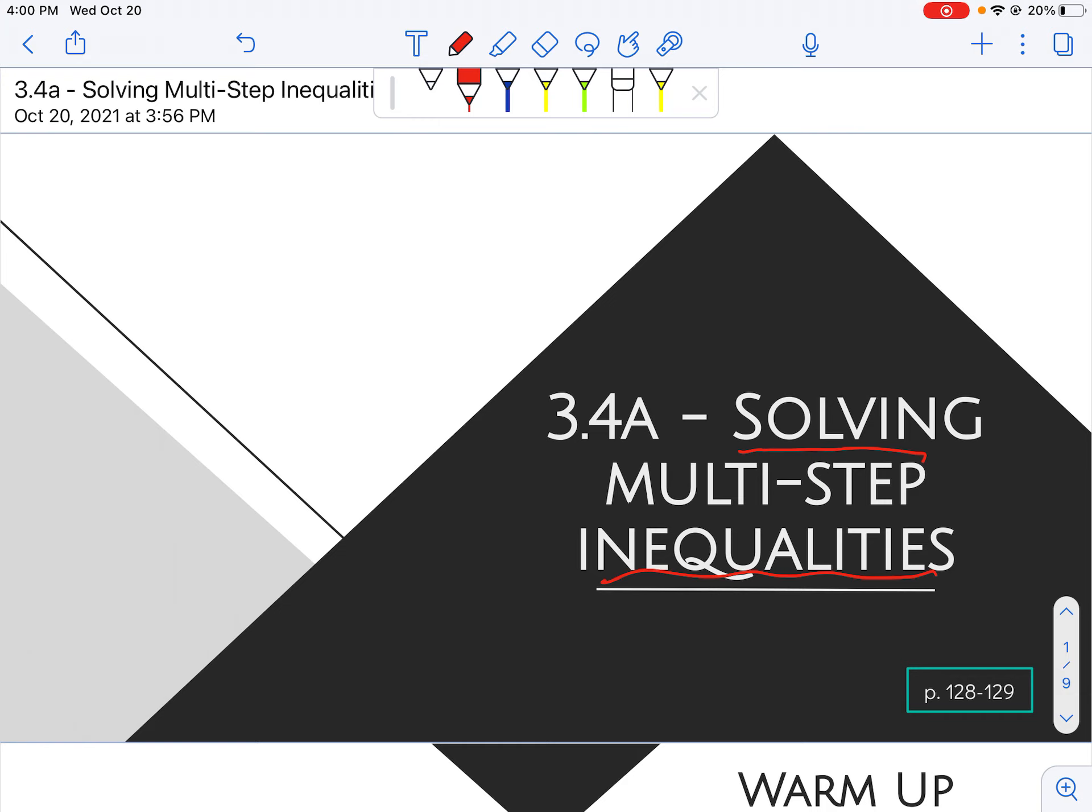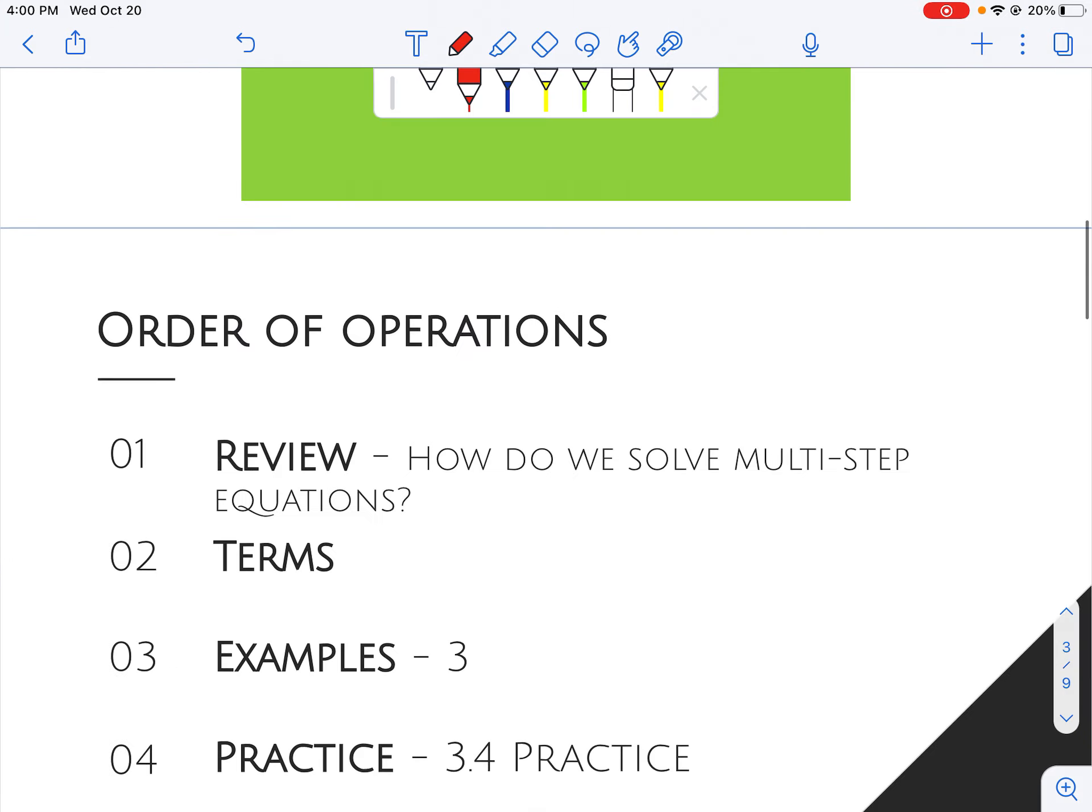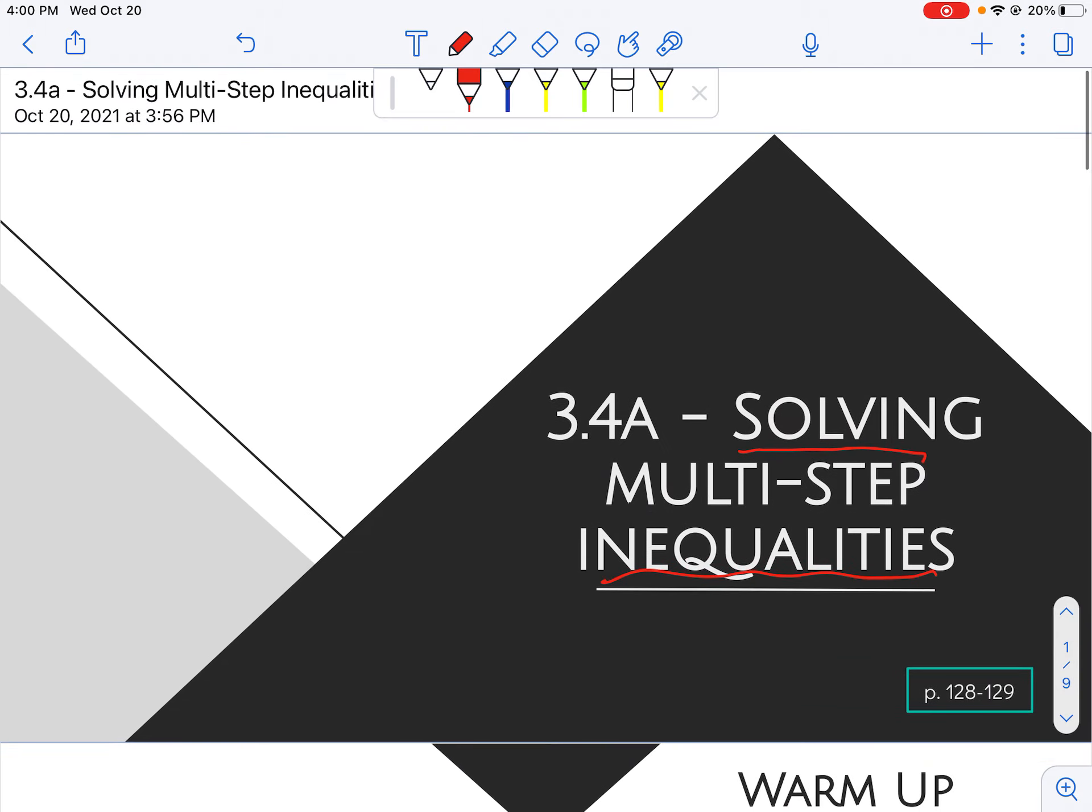When we've solved inequalities, we've talked a lot about how it is just like solving something with an equal sign. If we had a one-step equation, x plus 7 equals 12, subtract 7, x equals 5.